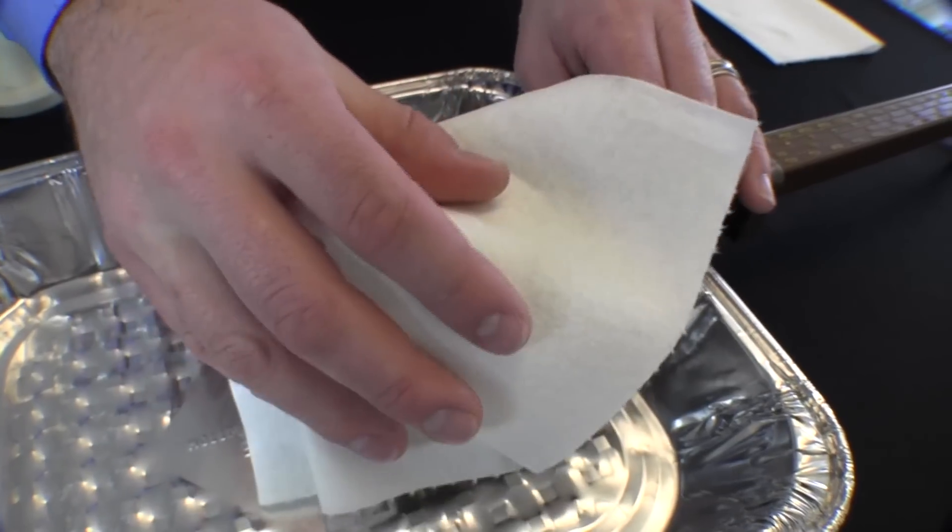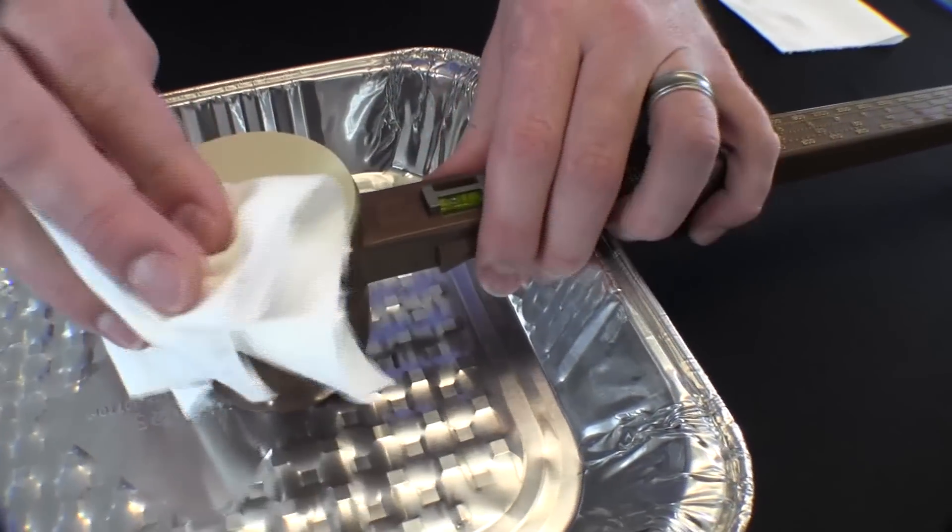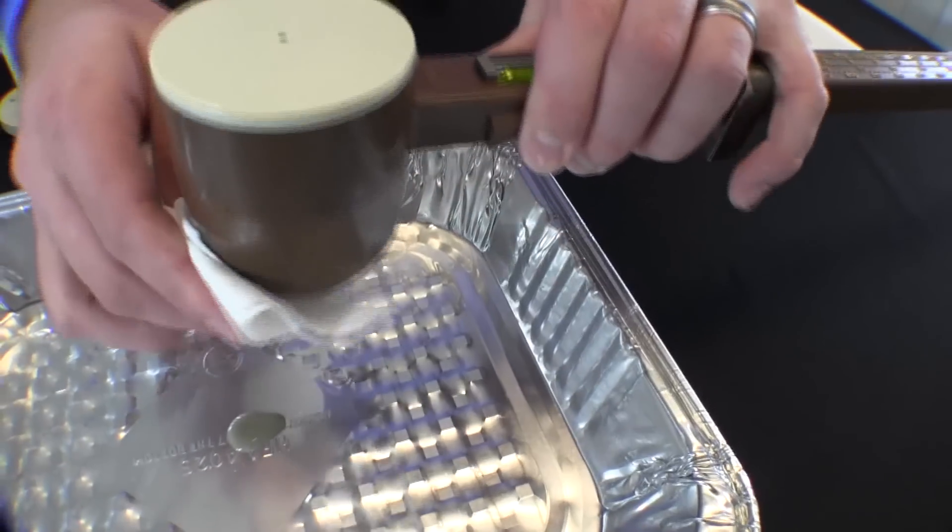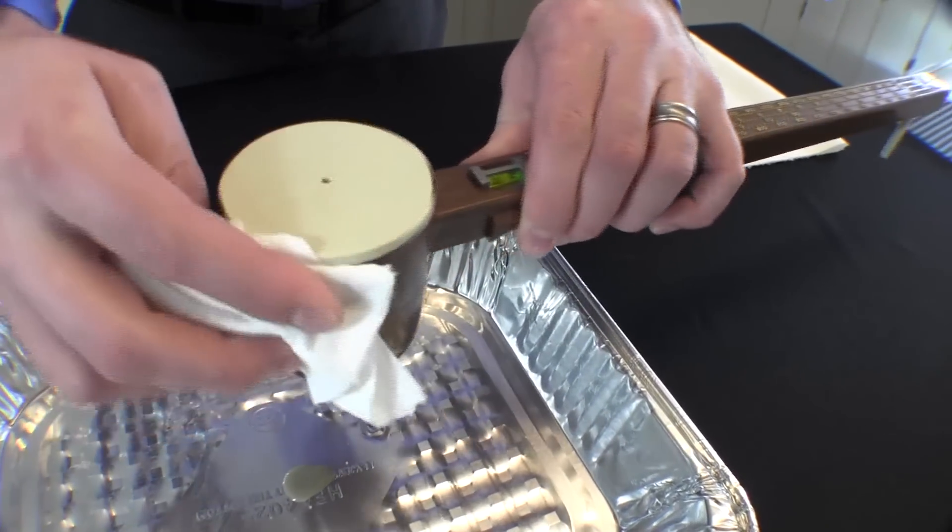Next wipe the bentonite drilling fluid from the mud balance. Once the mud balance is clean and dry it can be placed on the fulcrum.